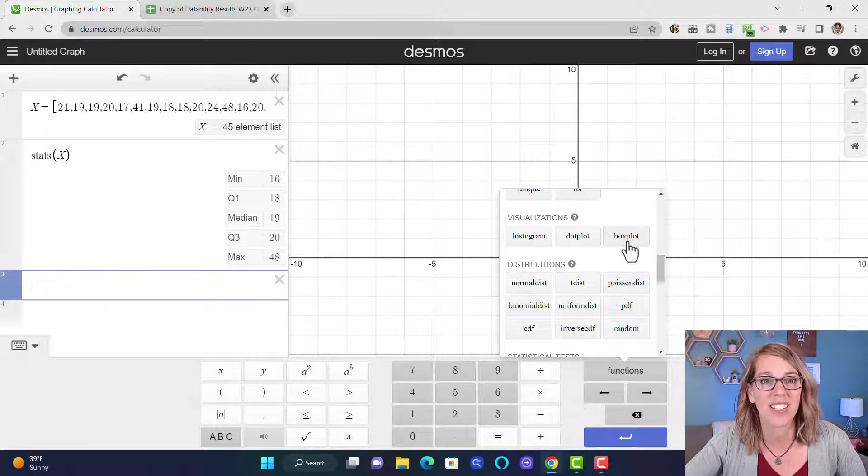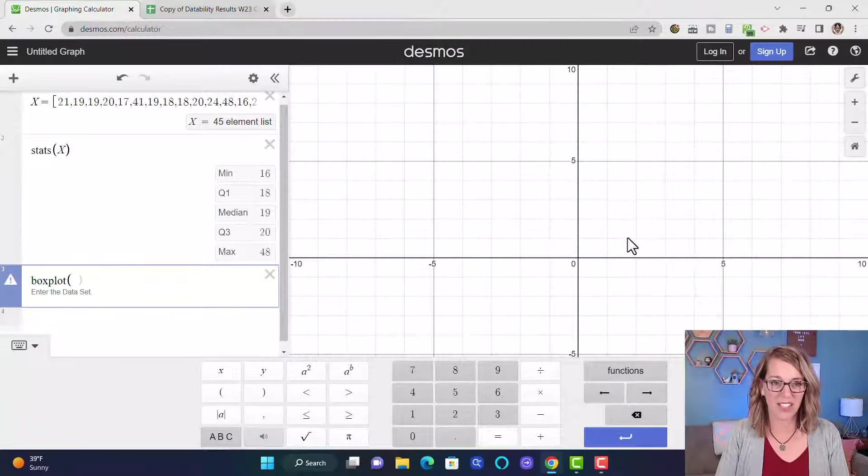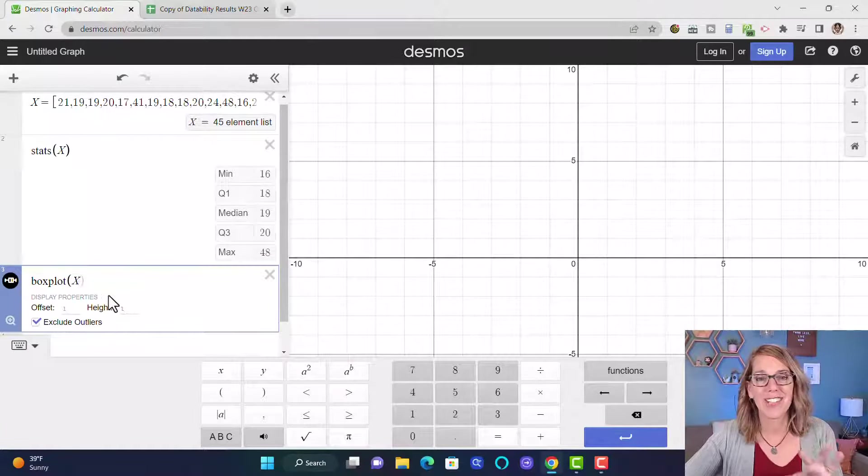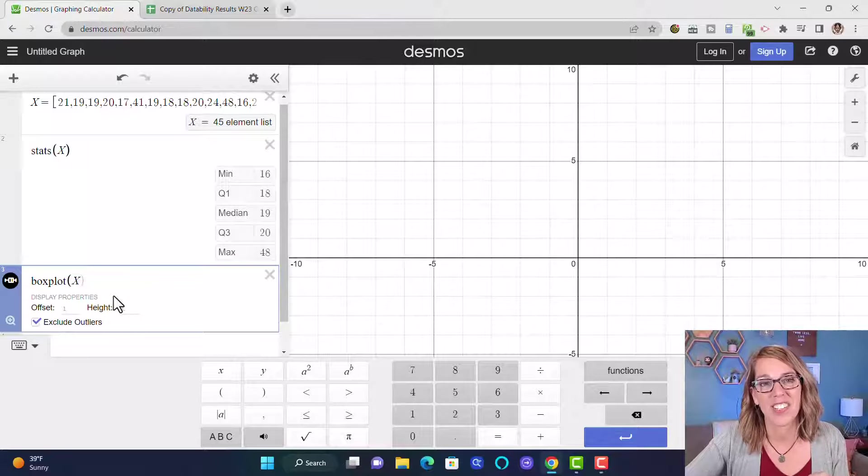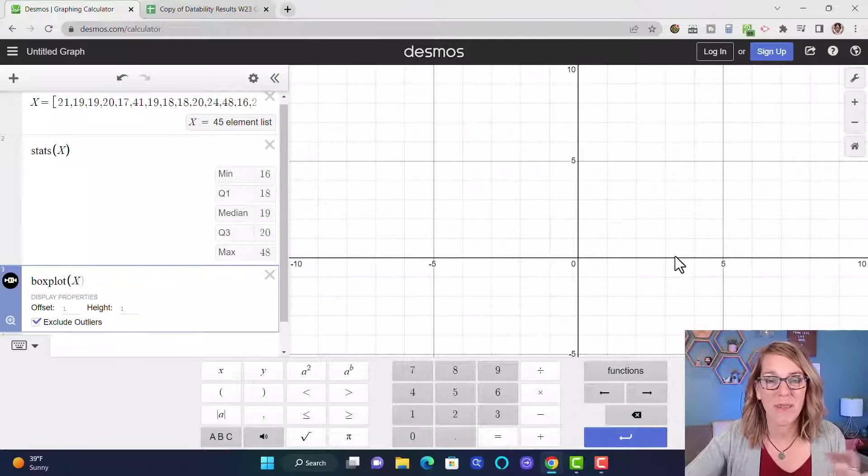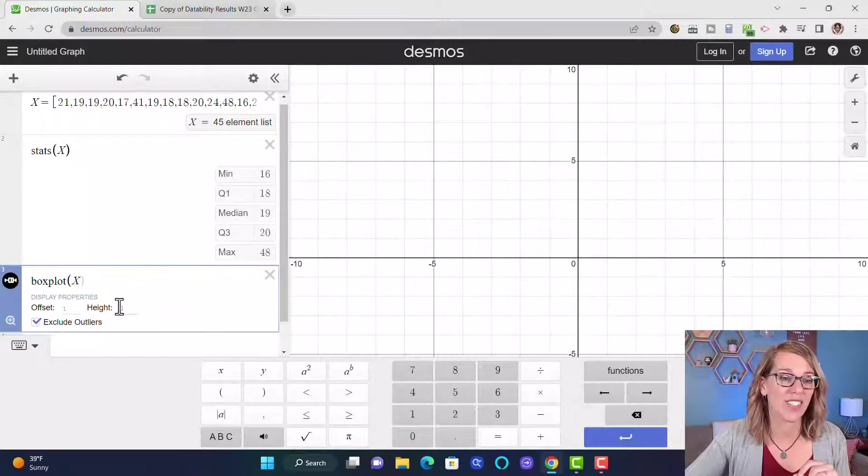So I'm going to click a box plot and then X. You'll notice that nothing showed up, but think about my ages. These were my students. I think the youngest age, well there it is at 16, and my scale right now, my grid right now doesn't include 16.